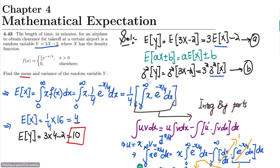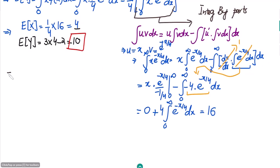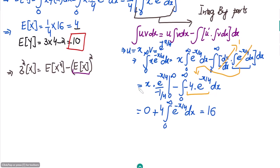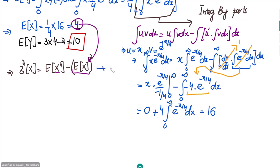Now to find the variance, we use formula B, and for that we need σ²(X). To find σ²(X), we use the formula: σ²(X) = E[X²] − (E[X])². The value E[X] = 4 is already known, so (E[X])² = 16. We still need to find E[X²], so let me call that equation C.